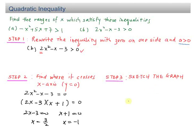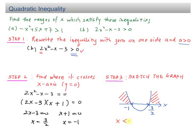Now sketch the graph: it is a U-shape crossing the x-axis at negative 1 (smaller value) and 3 over 2 (larger value). Looking back at the inequality sign — more than 0 — so shade the upper part of the x-axis. The final answer is x less than negative 1 or x more than 3 over 2.